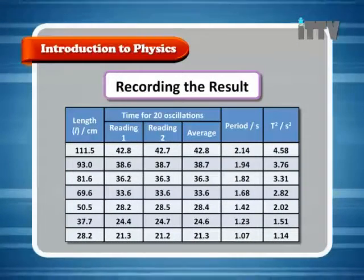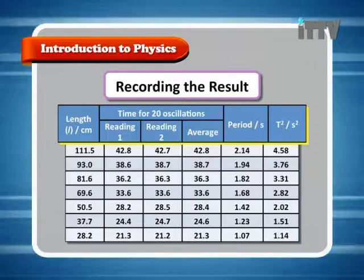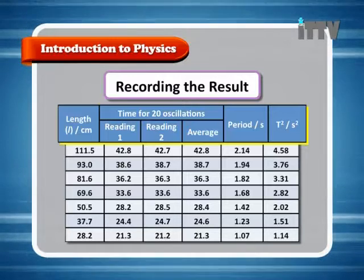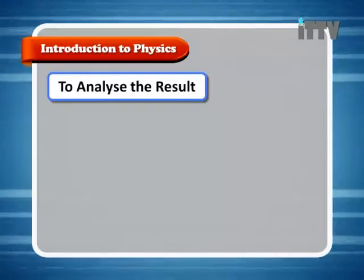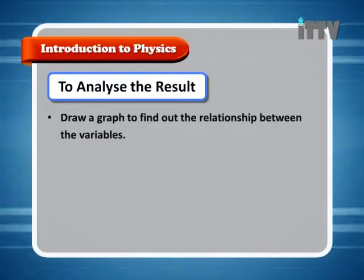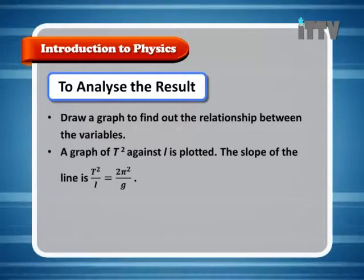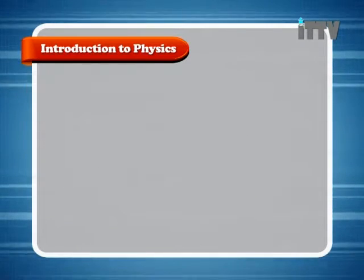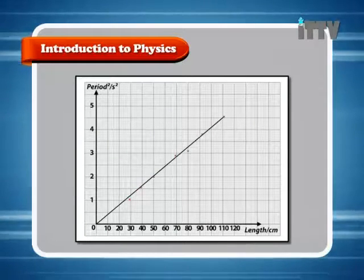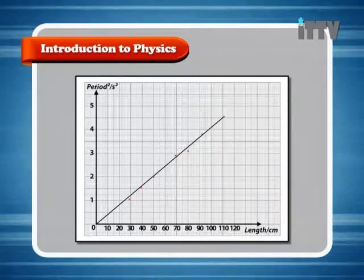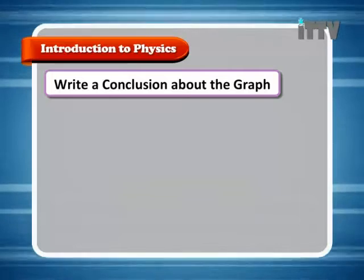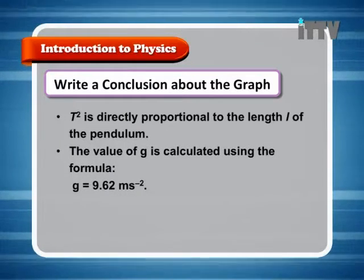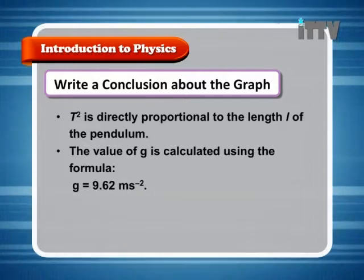Recording the results: in the table we have the length in the first column, then reading 1 and reading 2, the average reading for the oscillation, the period, and the period squared. To analyze the results, draw a graph to find the relationship between the variables. A graph of t-squared against L is plotted. The slope of the line is t-squared over L, which equals 2π² over G. The conclusion: t-squared is directly proportional to the length L of the pendulum, and the value of G is calculated as 9.62 m/s².